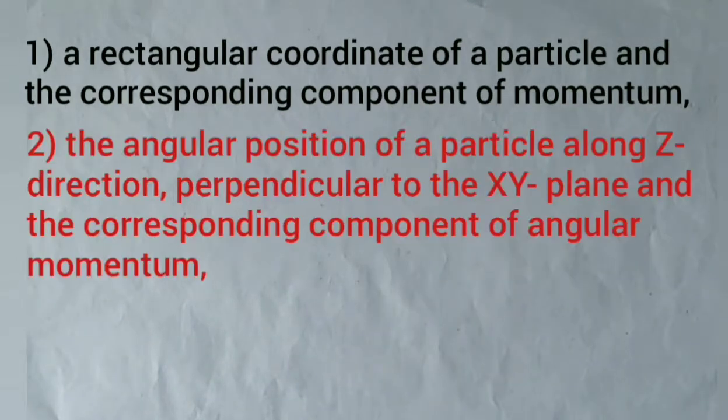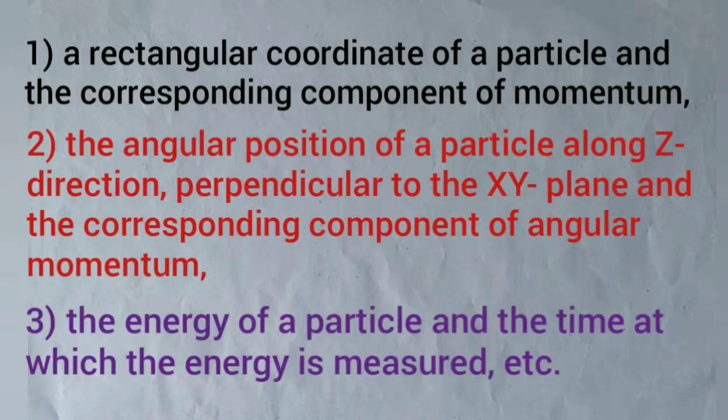The examples of such variables are a rectangular coordinate of a particle and the corresponding component of momentum, the angular position of a particle in z direction perpendicular to the xy plane and the corresponding component of angular momentum, the energy of a particle and the time at which the energy is measured, etc.